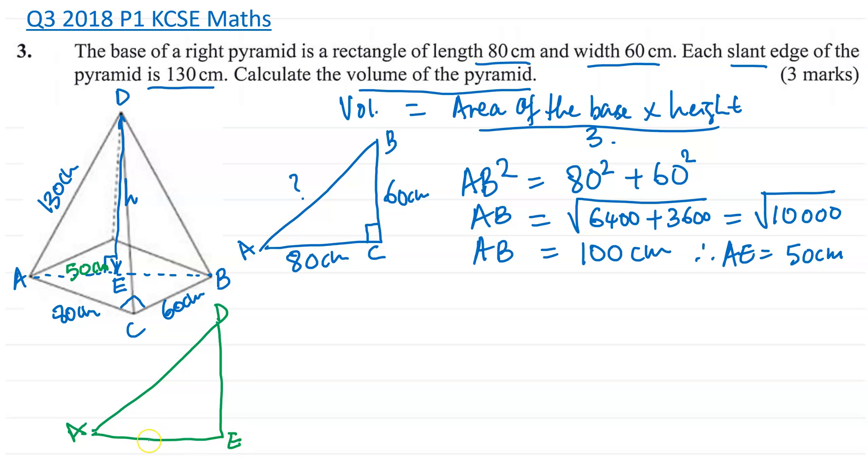Now I know AE is 50 centimeters. This is the height I'm looking for, ED or DE. Now remember, this is going to be 90 degrees, which makes AD the hypotenuse, which is the slanted side of the pyramid. It's 130 centimeters. So again, I'm just going to go ahead and use the Pythagoras theorem.